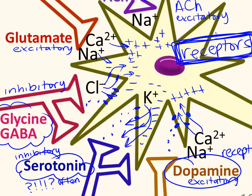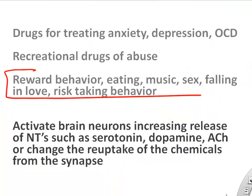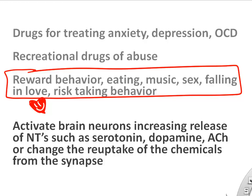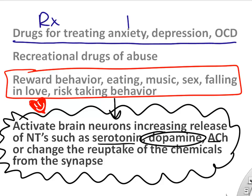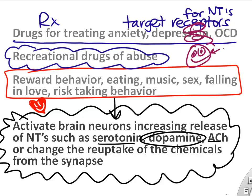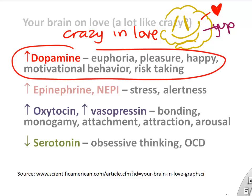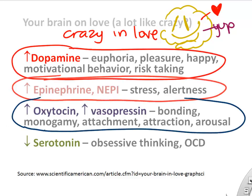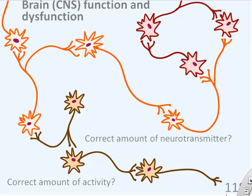All of these neurotransmitters bind to receptors and have their functions. Many are famous for things you might enjoy — for example, your favorite song activates dopamine signaling in your brain. Prescription drugs target receptors for these neurotransmitters to help brain function. Recreational drugs that feel good may activate these brain chemicals. When you're in love, studies show increases in dopamine, epinephrine, and oxytocin, with decreased serotonin — causing powerful changes in brain behavior, so 'crazy in love' may be more true than you think.